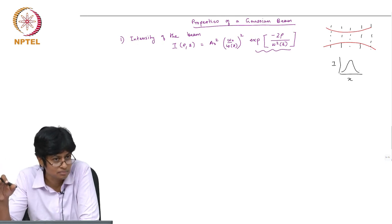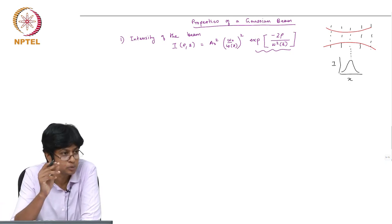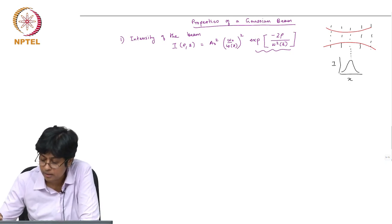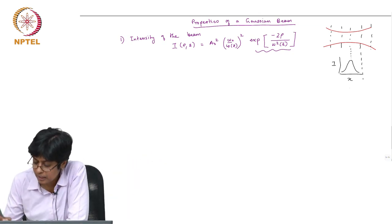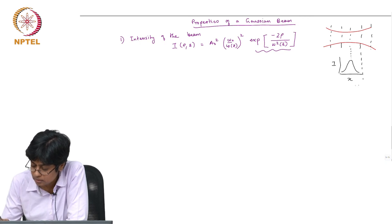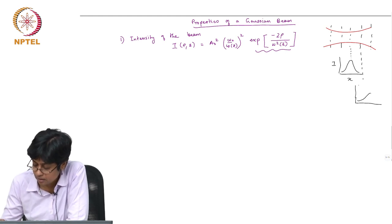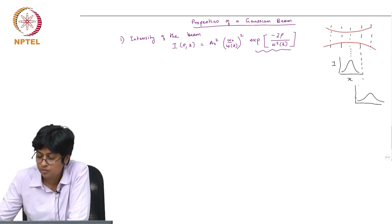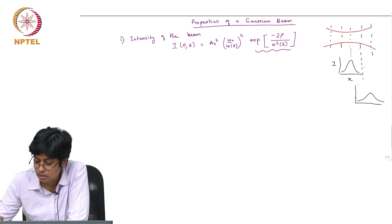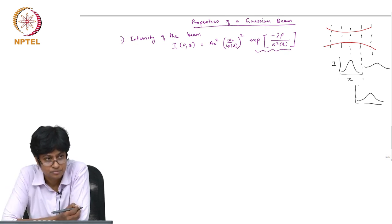What changes is where the peak occurs. If I am at the plane where the minimum spot is, this is what I would get. But if I move further, the beam has diverged, so at this plane what you would get is still Gaussian but more spread out, and if I went to this plane still Gaussian but even more spread out.